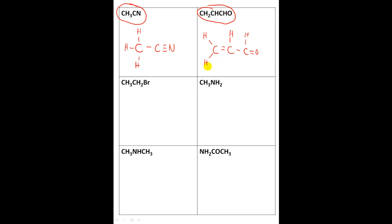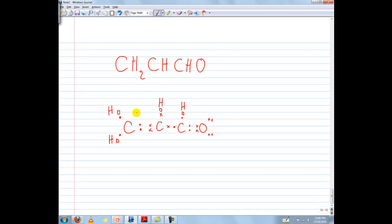This one is pretty hard to visualize, so I'm going to show you the Lewis diagram so you know where all the electrons came from. As you can see, this C over here has four electrons that belong to it, but it's gained 1, 2, 3, 4 — so it has a total of 8 over here.